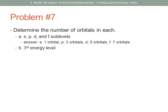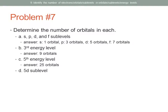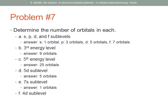For the third energy level: the number of orbitals in any energy level equals N squared. N=3, so 3 squared is 9 orbitals. The fifth energy level: 5 squared is 25 orbitals. The 5D sublevel contains five orbitals — any D sublevel has five orbitals regardless of energy level. The 7S sublevel contains one orbital — every S sublevel has one orbital. The 4D sublevel also has five orbitals.